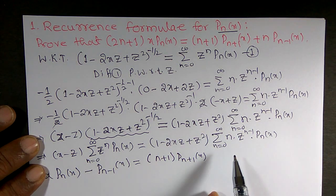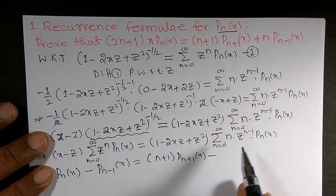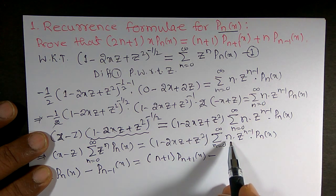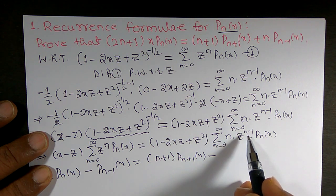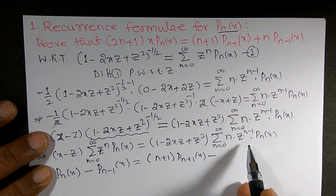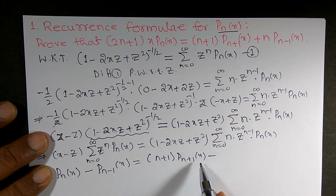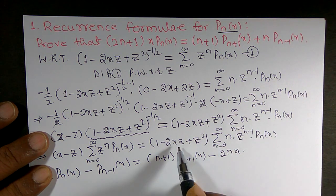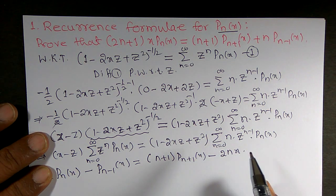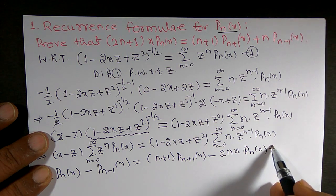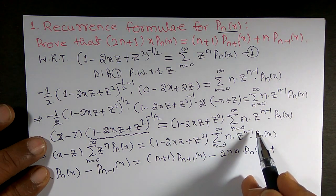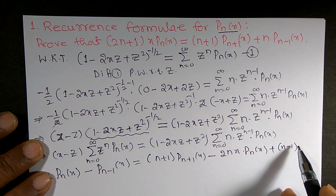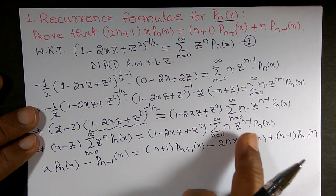Continuing on the right side: from the term -2xz times n · z^(n-1), which gives z^n, the coefficient is -2n · x · Pn(x). From the term z² times n · z^(n-1), which gives z^(n+1), replacing n by n-1 gives the coefficient (n-1) · P_{n-1}(x). So this is the coefficient of z^n on the right-hand side.